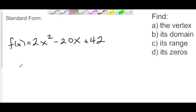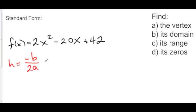There's some memorizing to do in standard form. The x-coordinate of the vertex, which we call h, is equal to negative b over 2a. So negative b gives us 20 over 2a, 2 times 2 is 4, 20 over 4 is 5.